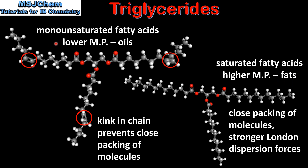The lower melting point of a triglyceride made from monounsaturated fatty acids is due to the presence of carbon-to-carbon double bonds. The carbon-to-carbon double bonds produce a kink in the chain which prevents close packing of molecules. This results in weaker London dispersion forces between the triglyceride molecules and therefore a lower melting point. If the fatty acids have carbon-to-carbon single bonds, there is closer packing of molecules, which results in stronger London dispersion forces between the triglyceride molecules and a higher melting point.